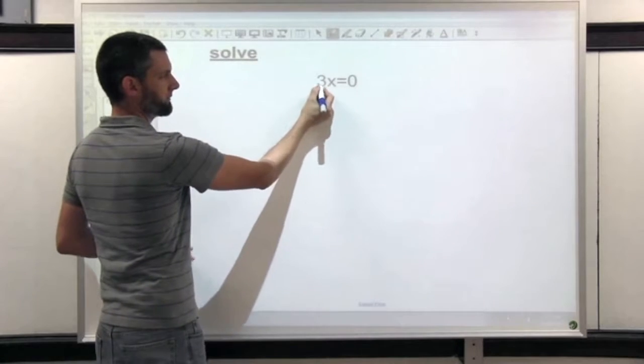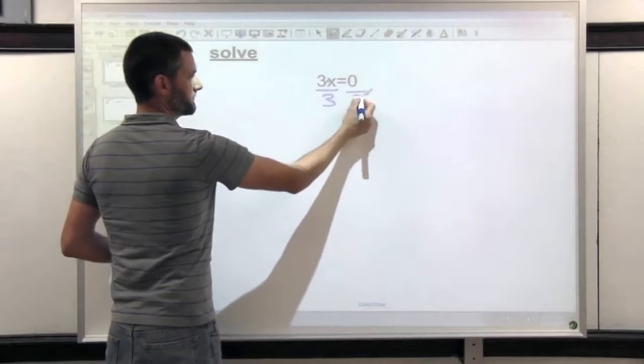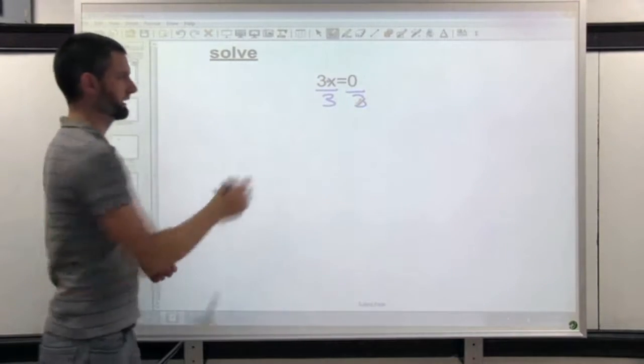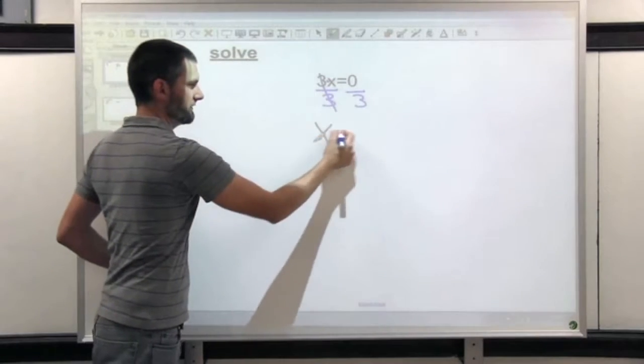If you have three or any number times x and you need to divide, because that's the opposite of multiplying, let's see what happens. x is all that's left.